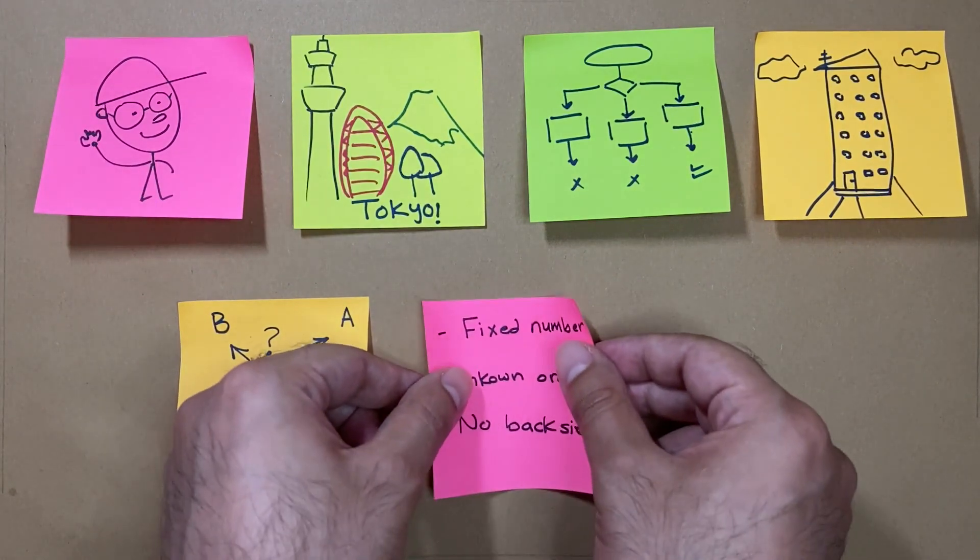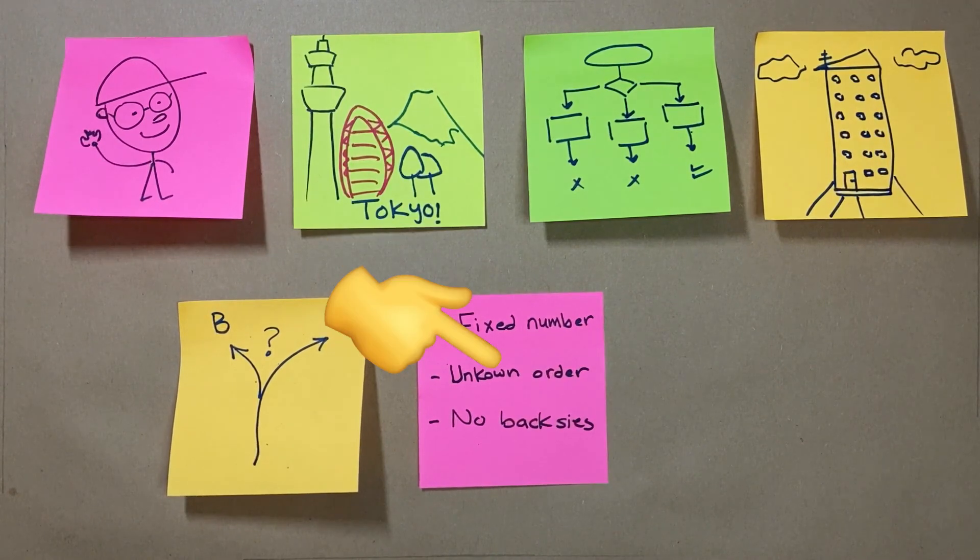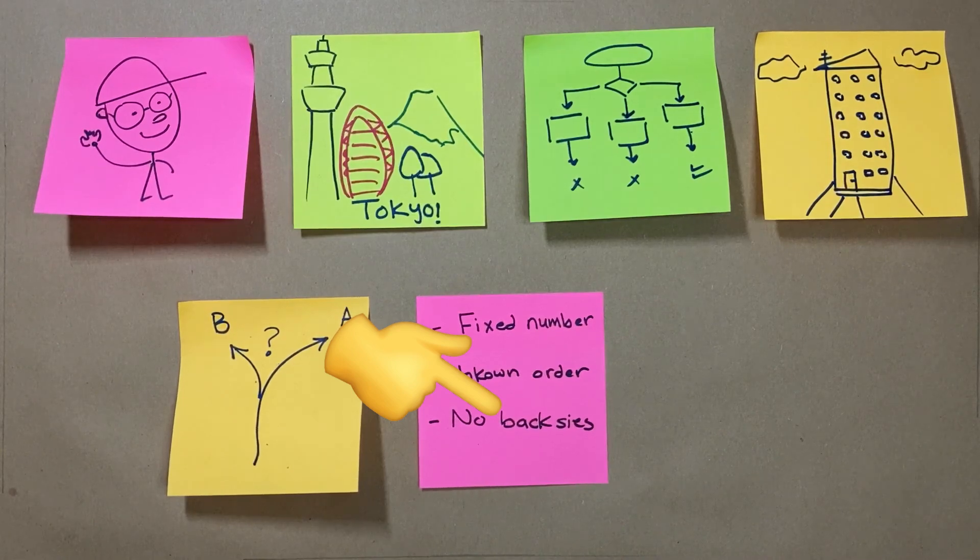In his quest, we will assume that Ted has a fixed number of flats to choose from, presented to him in unknown and random order. Once he rejects a flat, he can't change his mind.